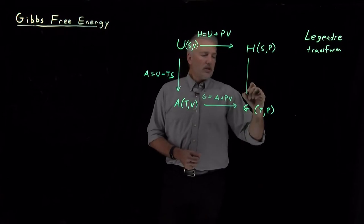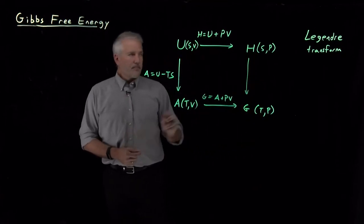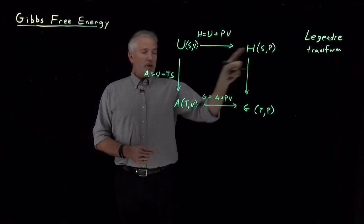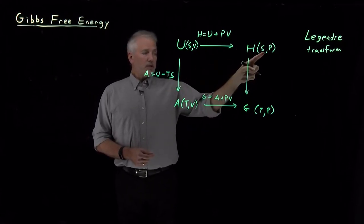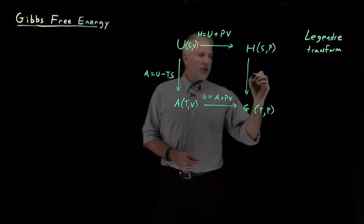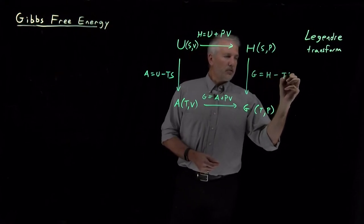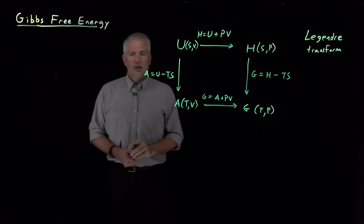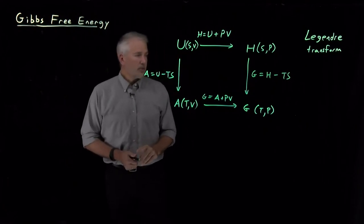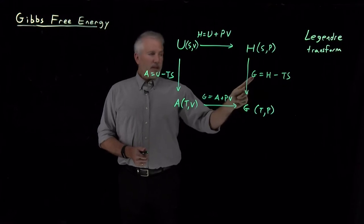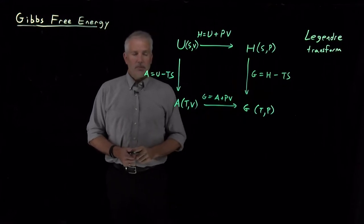Or we could consider doing it from the other side. We could take the enthalpy, subtract TS from it in order to transform this S into a T. So the G in this expression will look more familiar to those of you who have seen the Gibbs free energy before. In general chemistry, for example, enthalpy minus temperature times entropy is another definition of the Gibbs free energy.